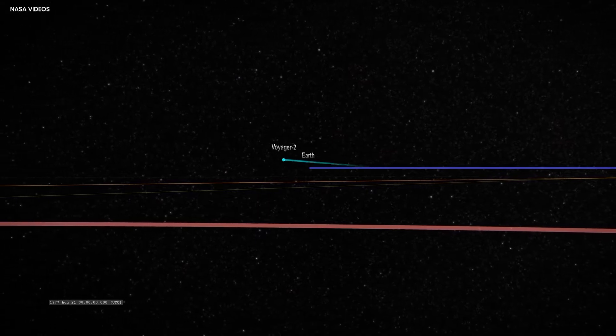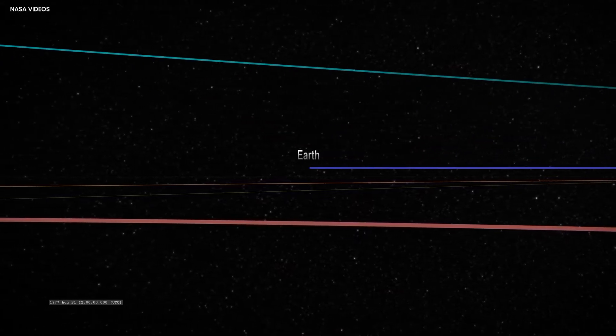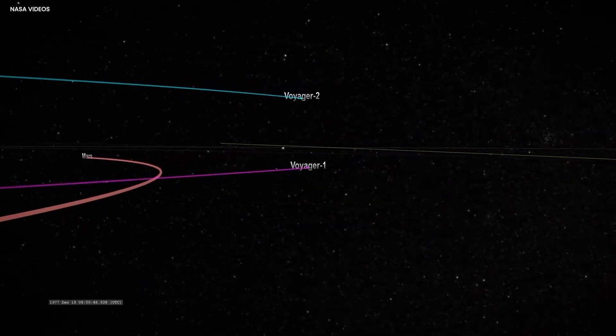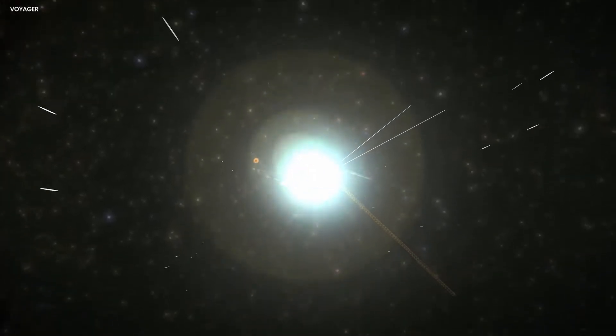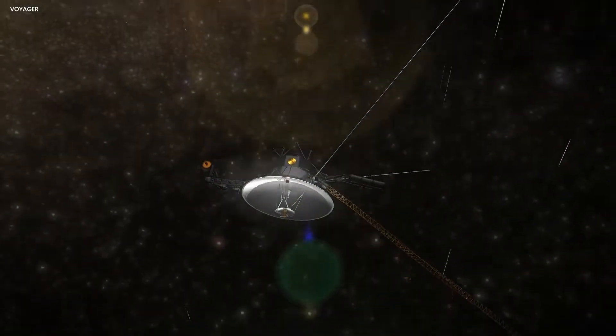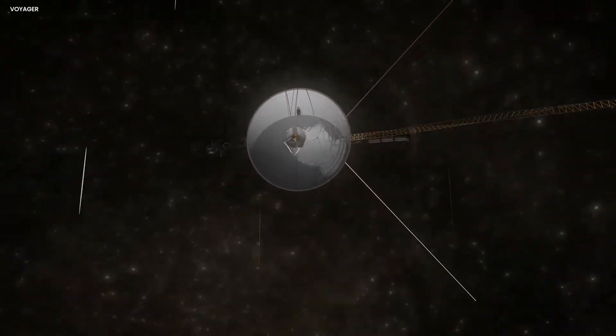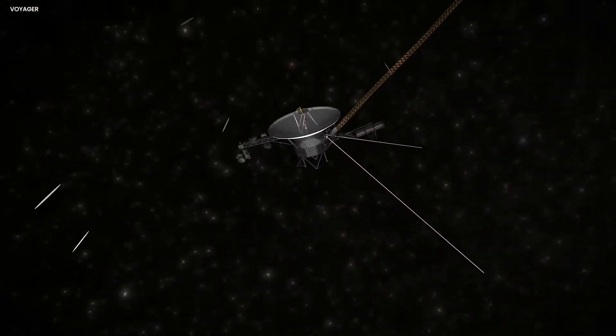While Voyager 1 and its counterpart Voyager 2 will continue their journey into the depths of space indefinitely, their remaining time is limited from our perspective here on Earth. These venerable probes are aging, and their plutonium power sources are gradually depleting. Sometime during this decade, the spacecraft's power will eventually run out. However, their invaluable contributions to space exploration will continue to resonate for generations to come.